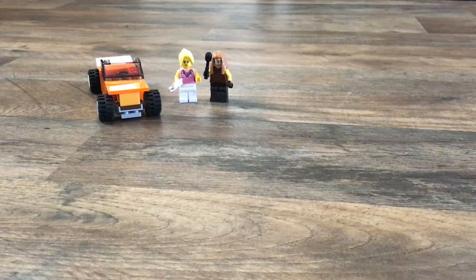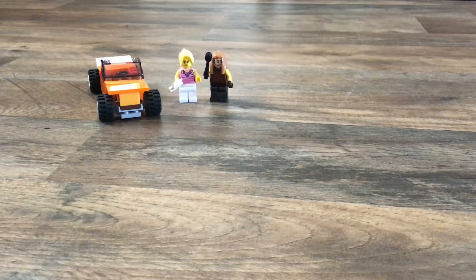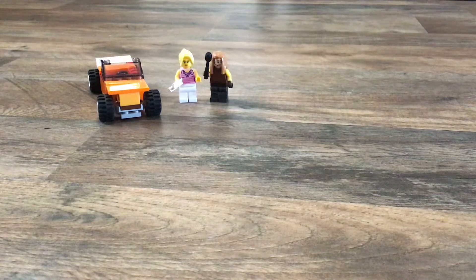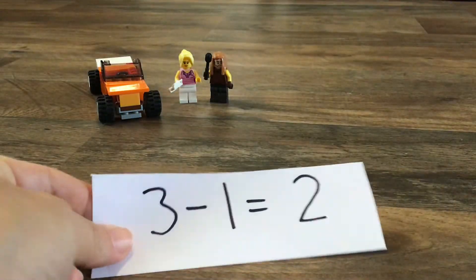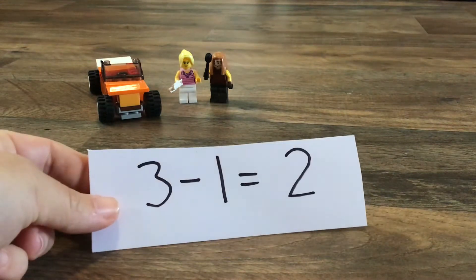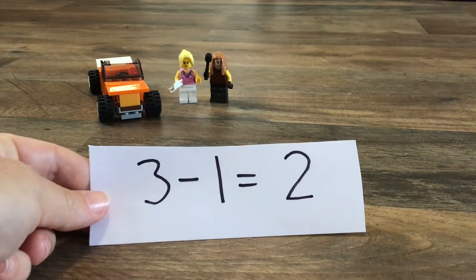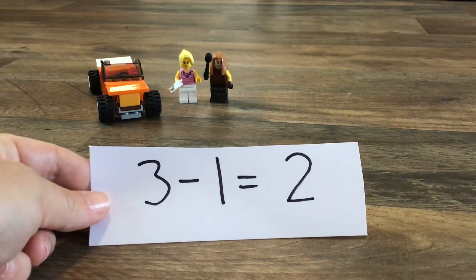Now how many Lego people do we have? We have two Lego people. Look. One, two. All right. Well, that's what our equation looks like again. We have three. We take away one. And now we've got two.